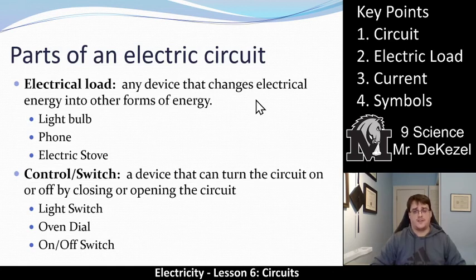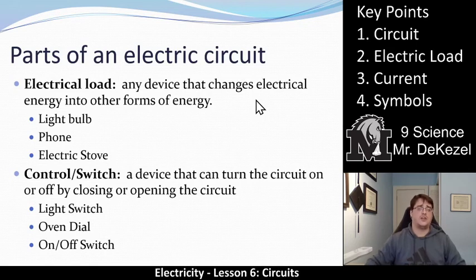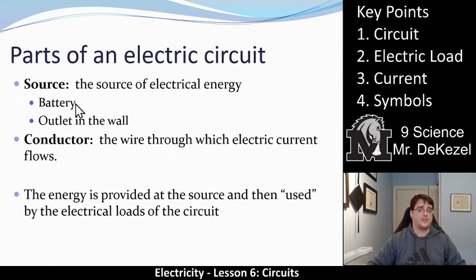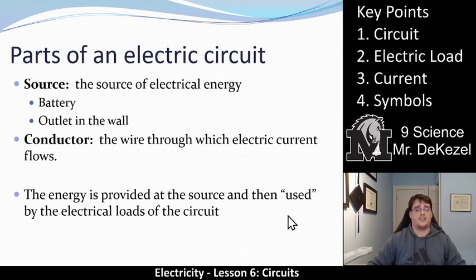A control switch is a device that can turn the circuit on or off by closing or opening the circuit. A light switch is a really easy way to break a circuit so that energy doesn't flow through and the light goes off. An oven dial or any on-off switch is an example of a control switch. The source of electrical energy is essentially the battery or the outlet in the wall. And a conductor is the wire through which the electrical current flows. The energy is provided at the source and then it is used by the electrical loads of the circuit as it travels from one side to the other.